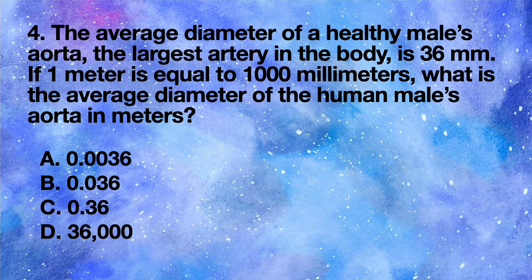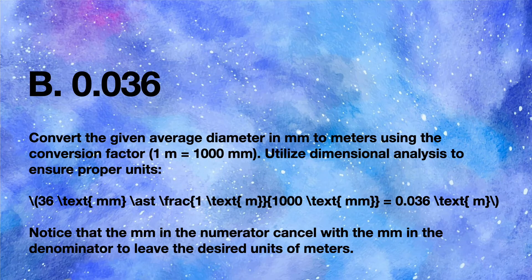If one meter is equal to 1000 millimeters, what is the average diameter of the human male's aorta in meters? A 0.0036, B 0.036, C 0.36, D 36,000. Answer: B 0.036. Convert the given average diameter in mm to meters using the conversion factor 1 m equals 1000 millimeters.